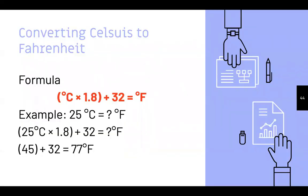Converting Celsius to Fahrenheit: the formula is °C × 1.8 + 32 = °F. For example, 25°C: 25 × 1.8 = 45, then 45 + 32 = 77°F.